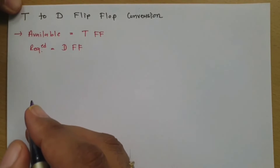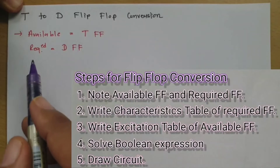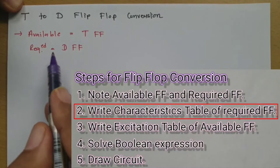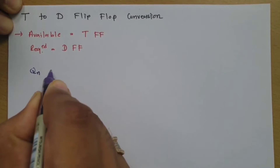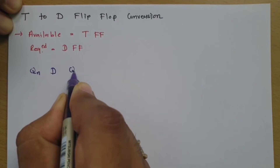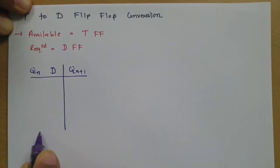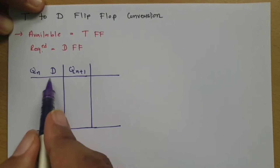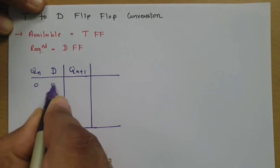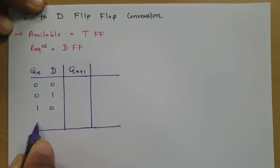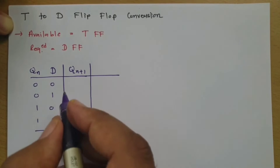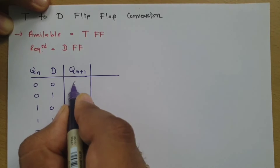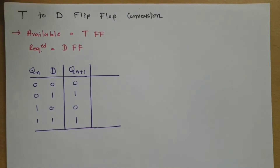The second step is to write the characteristic table of the required flip-flop, which is the D flip-flop. In the characteristic table we have the current state Qn, the input D, and the next state Qn+1. With Qn and D, the total combinations are 00, 01, 10, and 11. The next state for the D flip-flop is the same as the input D, so Qn+1 is 0, 1, 0, 1.